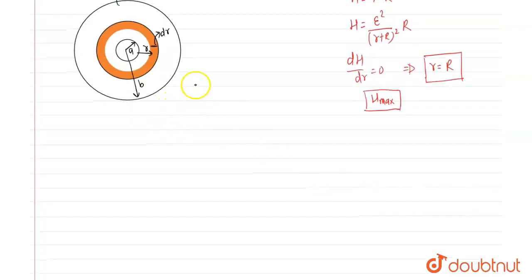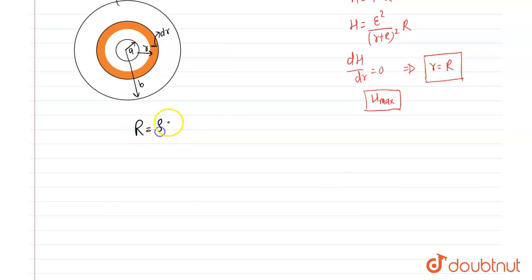So resistance of that element. As we know that the resistance relation is rho L upon A. So for that element resistance dR is equal to rho, thickness means length is dR and the area, area means cylindrical area. So radius R and length L. So area we will put here 2 pi R L. So all the elements from R is equal to A to R is equal to B are in series.